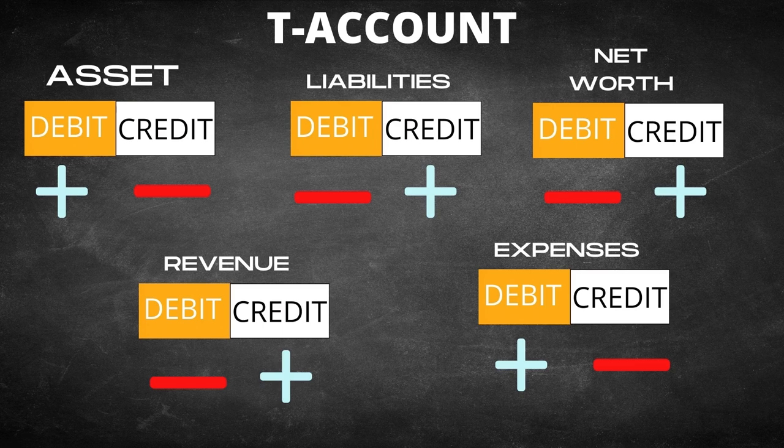For assets, the normal balance is debit. If you are going to add an asset, you put it on the debit side to increase the asset. If it's on the credit side, it will decrease the asset.